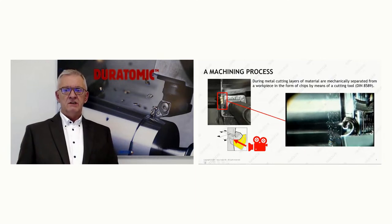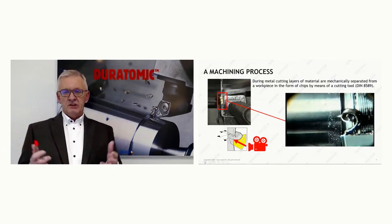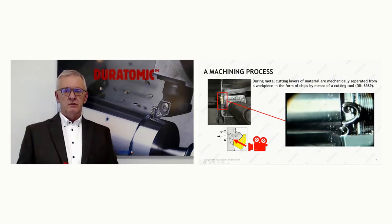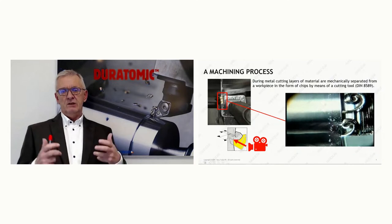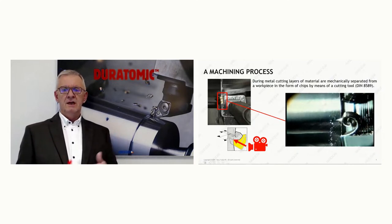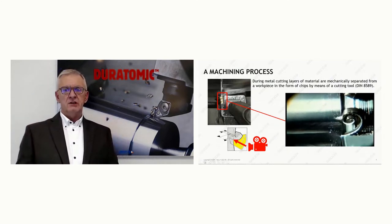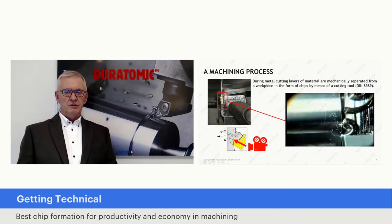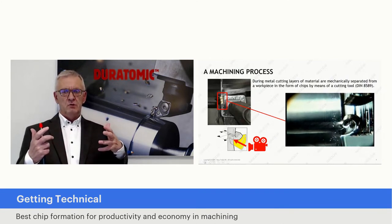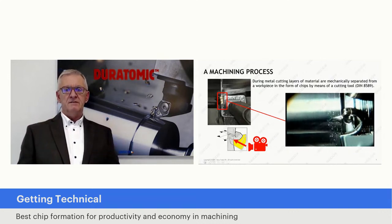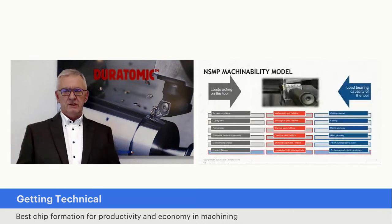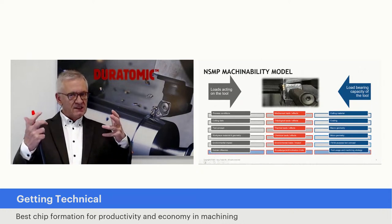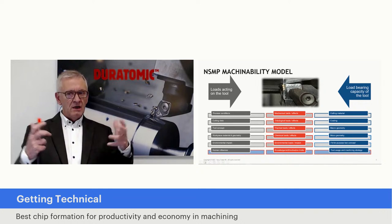We define the machining process, as you can see now on the screen, as a process where we have a cutting tool which we push through workpiece material, deforming it to such an extent that it shears off under the form of chips. And chips are the subject of this. Understanding this, we developed a next step machinability model — a model where we describe all the different variables in a machining process and how they interact with each other.